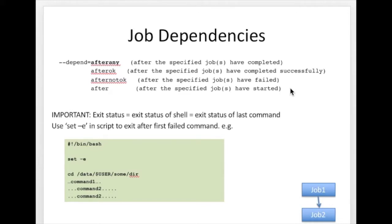How does the batch system determine whether a job was successful or failed? The exit status of a job is the exit status of the last command in the batch script. So if you have commands 1, 2, and 3, the exit status will be that of command 3. If command 3 was successful, the job would be marked as completed successfully even if commands 1 and 2 had failed.